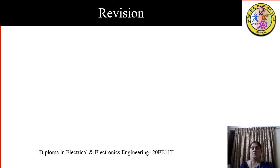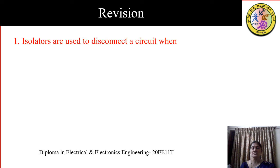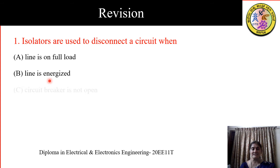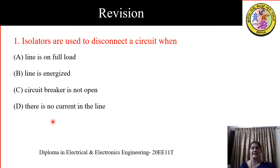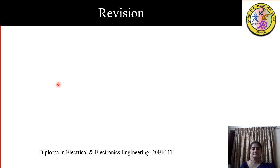Let us have a quick revision of all the concepts learned by answering MCQs. The first question is: isolators are used to disconnect the circuit when — A) the line is on full load, B) the line is energized, C) the circuit breaker is not open, or D) there is no current in the line. We know that isolators are also called no-load switches or disconnecting switches; they disconnect when there is no current in the line. So the answer is D.